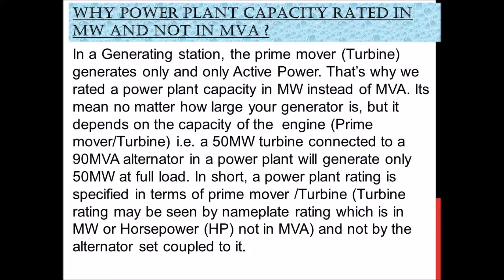It means no matter how large your generator is, it depends on the capacity of the engine, prime mover, or turbine. As an example, a 50 MW turbine connected to a 90 MVA alternator in a power plant will generate only 50 MW at full load.